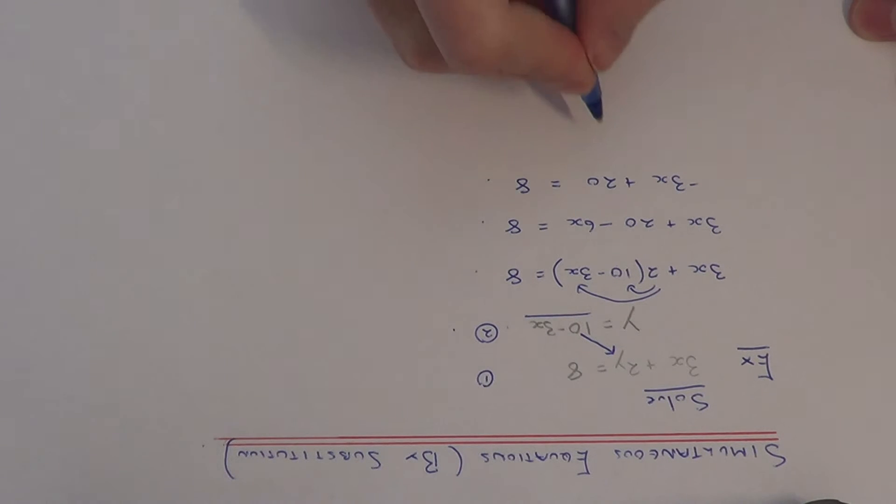So we've now got a simple equation here, which we can solve by doing the inverses. So let me get rid of the plus 20 first of all by taking 20 off both sides. So this will give us minus 3x equals minus 12.